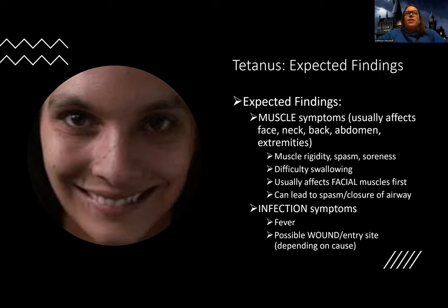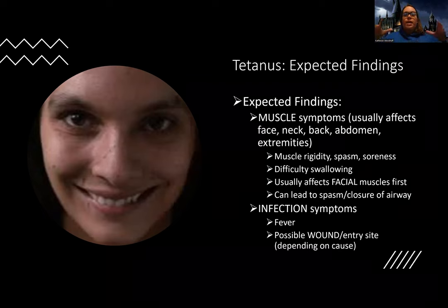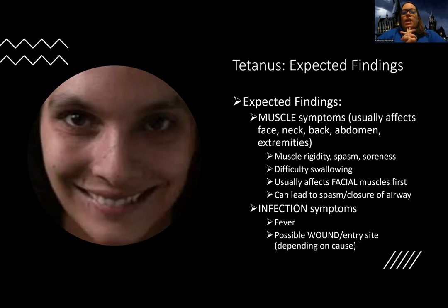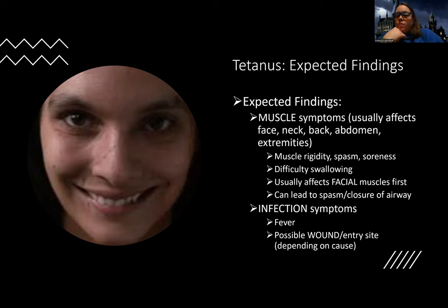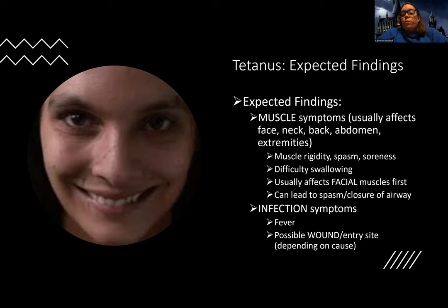So what does tetanus look like? Tetanus is a bacteria that leads to really rigid motor neurons — think of being stuck in a tensed state all the time. People with tetanus have a combination of muscle symptoms — that rigidity — and infection symptoms. The muscle symptoms include rigidity and really bad spasms, almost like being in a constant state of having a charley horse. Their muscles are very rigid, they can have spasms or be super sore, and this usually starts in their facial muscles.